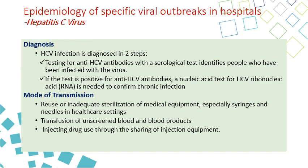For diagnosis, there are two steps: first, testing for anti-hepatitis C antibodies to indicate prior infection; second, nucleic acid testing to detect hepatitis C RNA for current infection. The mode of transmission includes reuse or inadequate sterilization of medical equipment shared between patients, especially syringes and needles. Disposable equipment can prevent this. Transmission also occurs through transfusion of unscreened blood or blood products, and through sharing injection equipment among drug users.